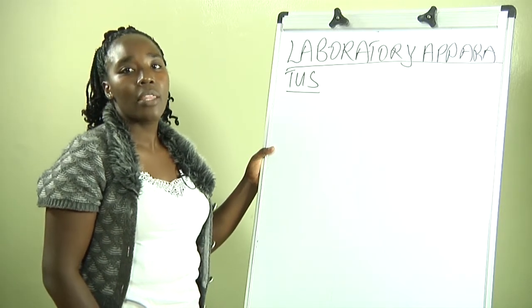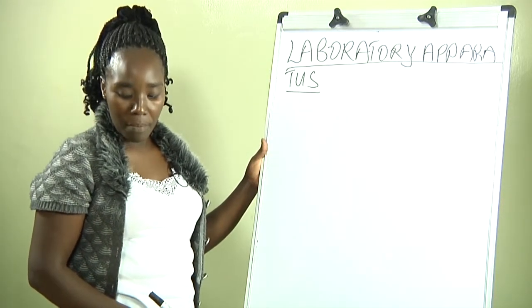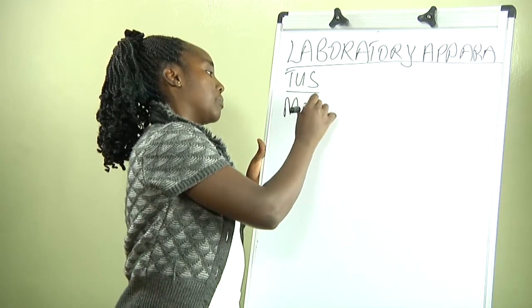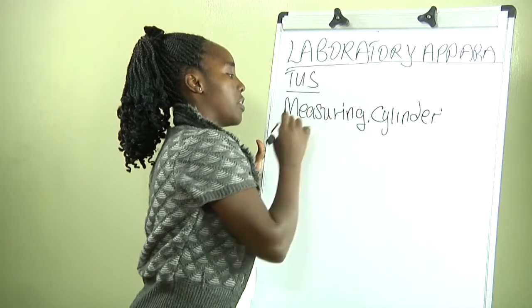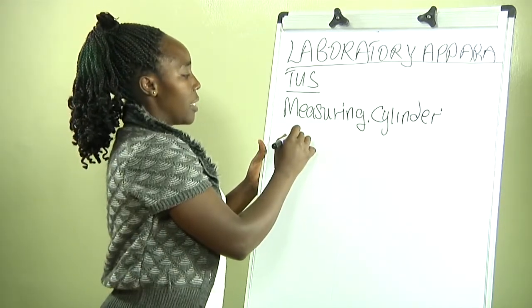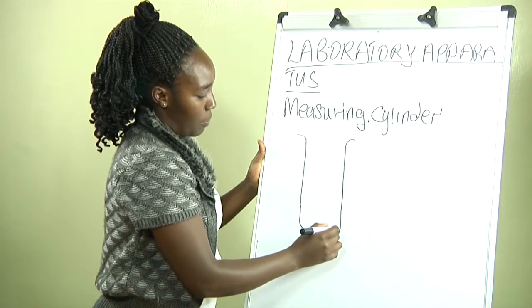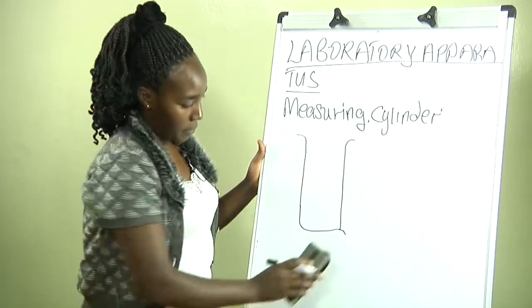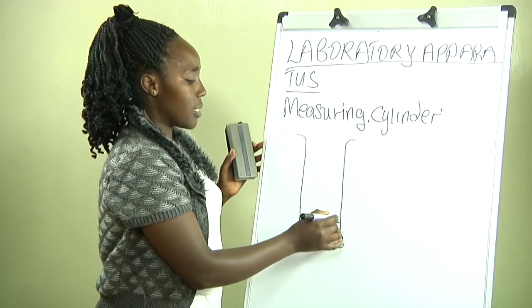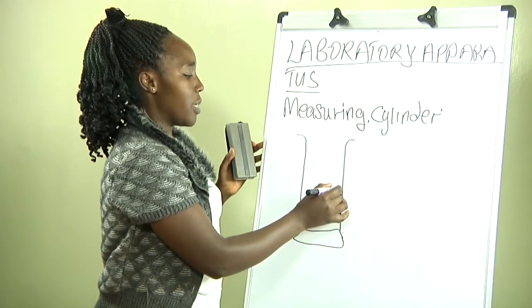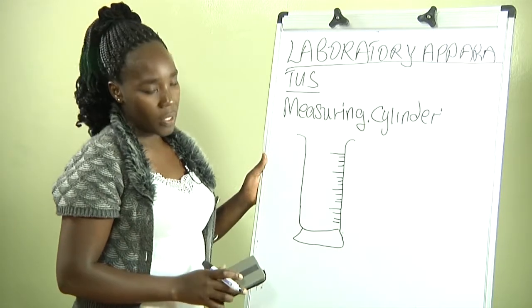The apparatus we use for measuring volumes — the volume operators. We have mainly a measuring cylinder. A measuring cylinder can be of different volumes depending on which one you have picked up. It has calibrations on its side depending on the volumes that you want to take from the chemicals you want to use in the laboratory.